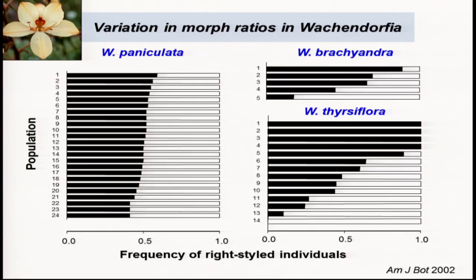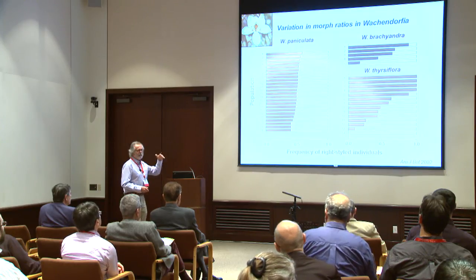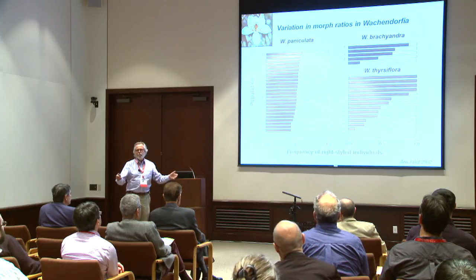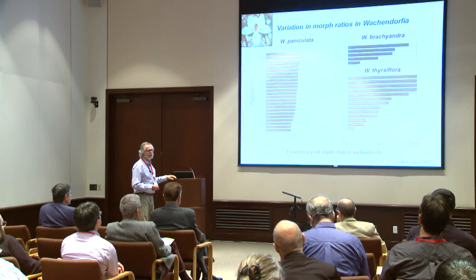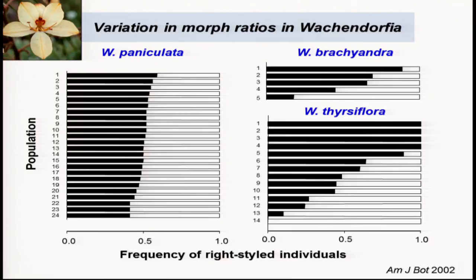What are the frequencies of right-handed and left-handed forms within populations of these three species? These are morph ratios from a sample of populations in the Cape where this species is endemic. As you might expect from the frequency-dependent selection hypothesis, in sexual populations we get even distributions of the left and right-handed morphs. Whereas with selfing, there's a lot of drift and founder effects, so we get a wide range of morph frequencies. And in Theresa flora, there is also a wide range of morph frequencies, including some monomorphic for one type — and in those populations, there is no seed set.